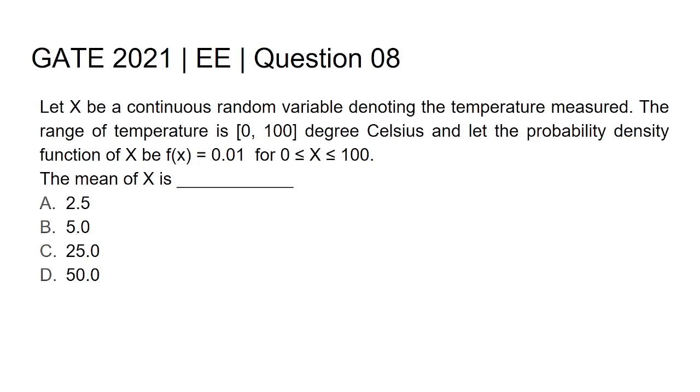For X is greater than or equal to 0 or less than or equal to 100, the mean of X is blank space. We have four options: option A 2.5, option B 5.0, option C 25.0, option D 50.0.